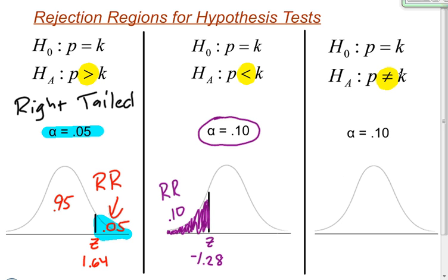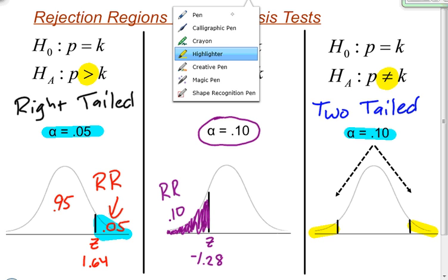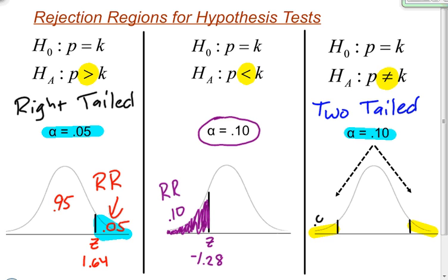Finally, this last example — the not-equal-to symbol in the alternative hypothesis leads me to a two-tailed test. When you have a two-tailed test, you draw a line to designate your rejection region on both sides, but your level of significance alpha gets split between the two tails. So alpha being 0.1 gets split: half goes on the left and half on the right. When I shade both rejection regions, half of alpha is 0.05 on each side.